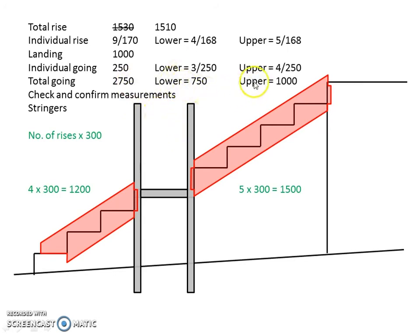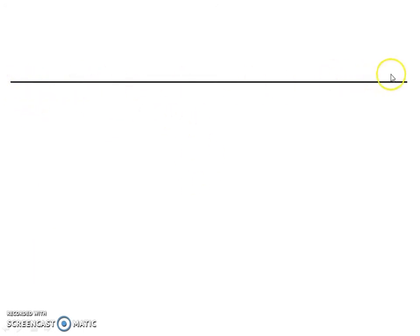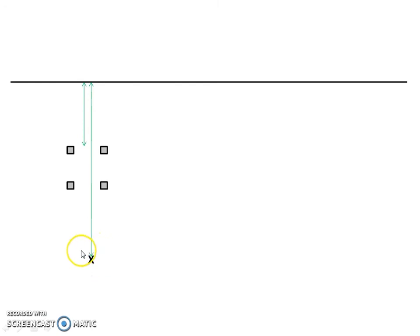I want to explain why I insist on working out the goings of our individual flights. It is possible to say nine rises, eight goings, take one away, add the landing, and come up with a total figure without working out individual flight goings. But it's important to work out what the individual flight goings are. This drawing shows a view from the top — a plan of our veranda. For a straight flight of steps, we work out our upper flight going, which is where our posts go, then measure our total going to find where the stairs will end and where we recheck our rise.